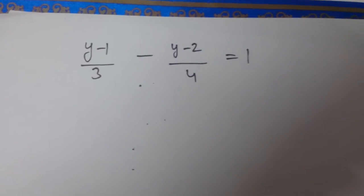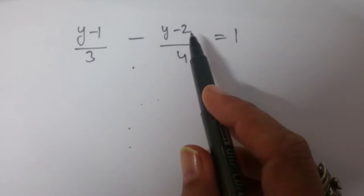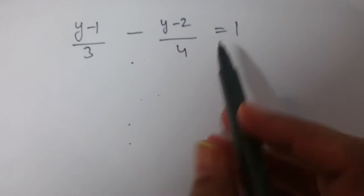Let us solve the linear equation in one variable: (y-1)/3 - (y-2)/4 = 1.